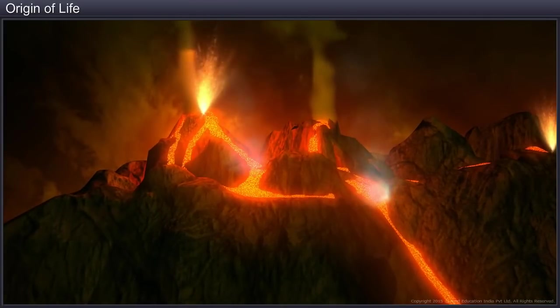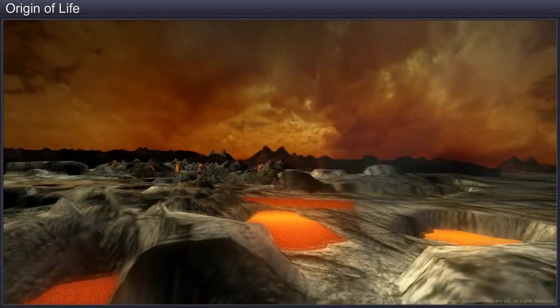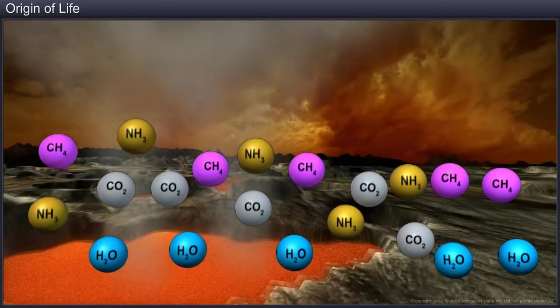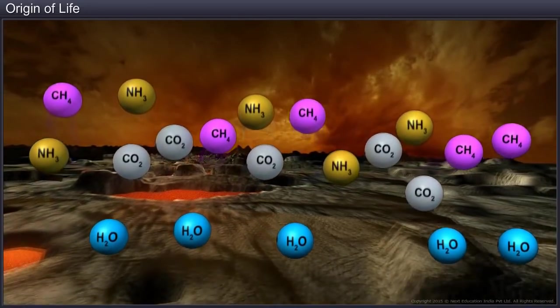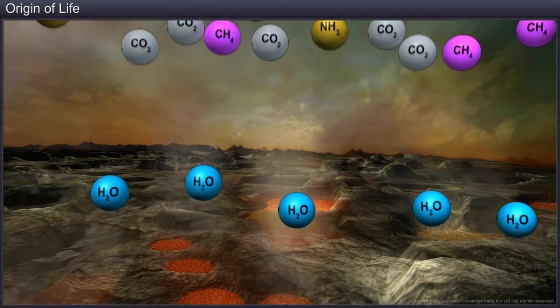At the time of its formation, there was no atmosphere on the earth. Its surface was covered by water vapor, methane, carbon dioxide and ammonia released from the molten mass.